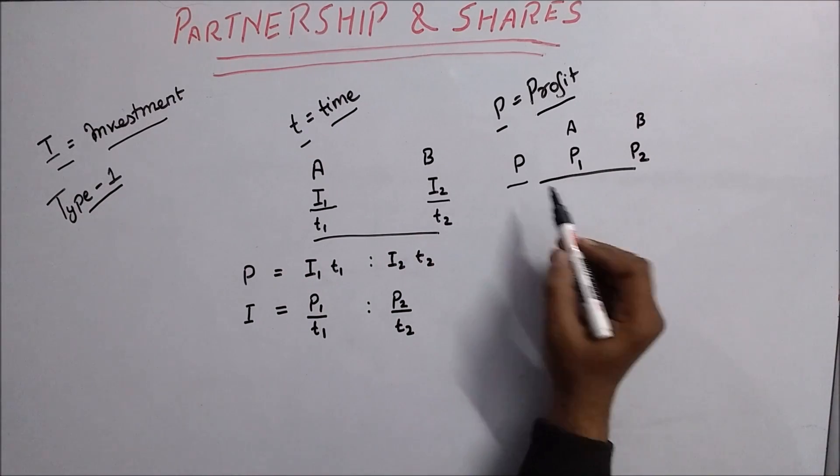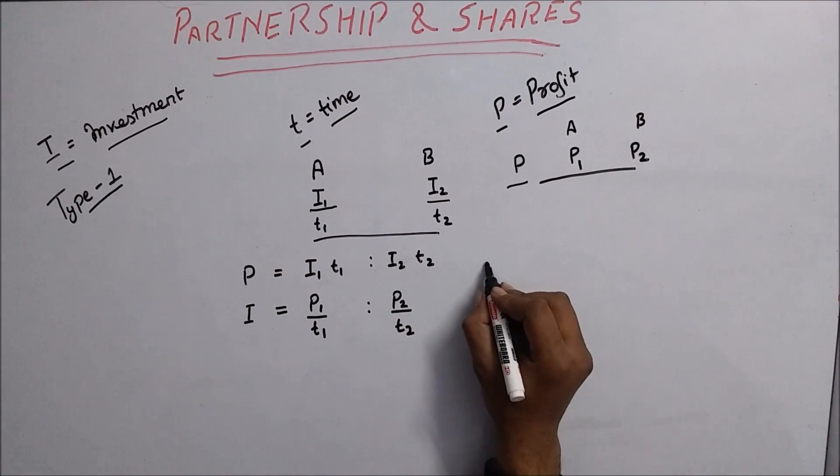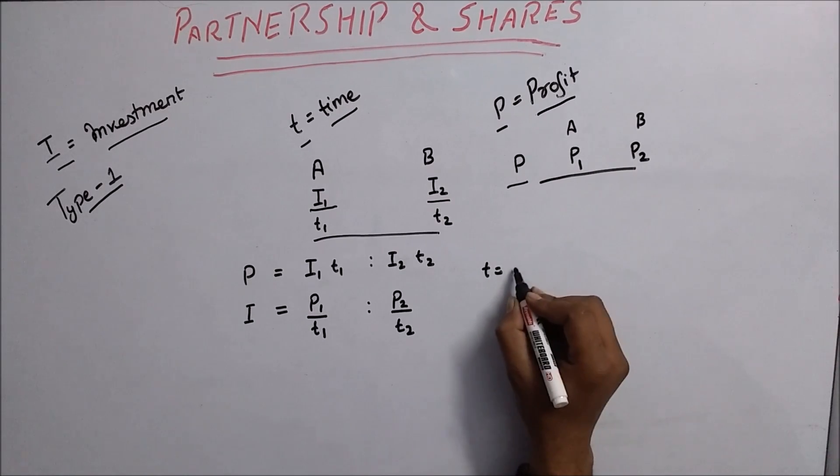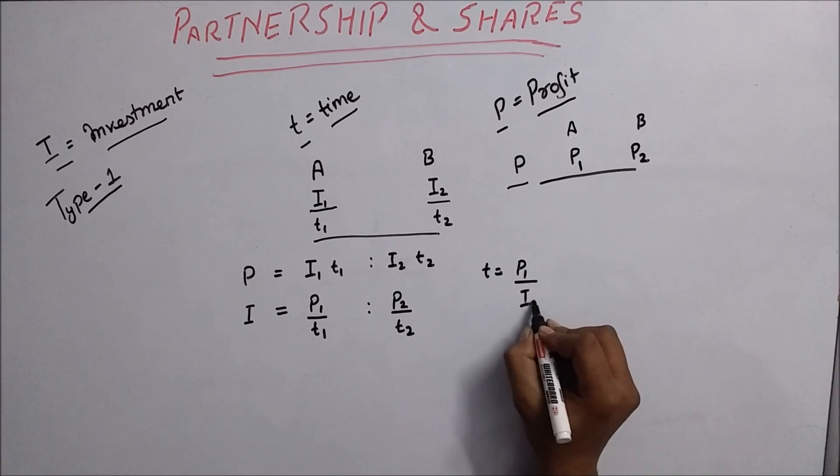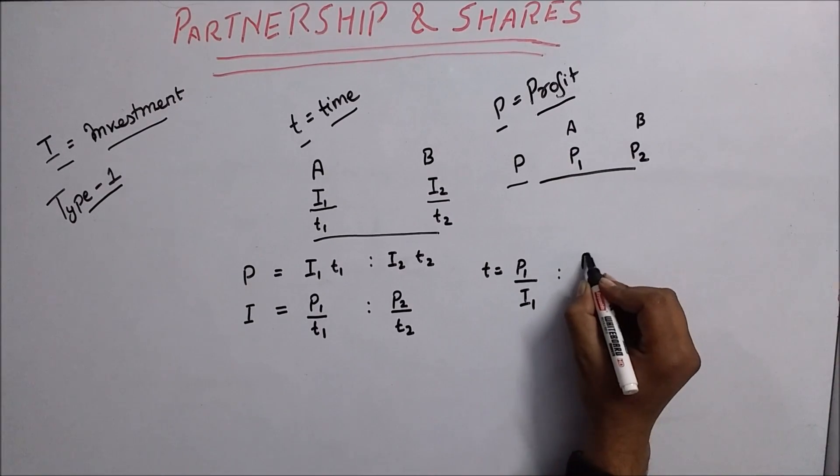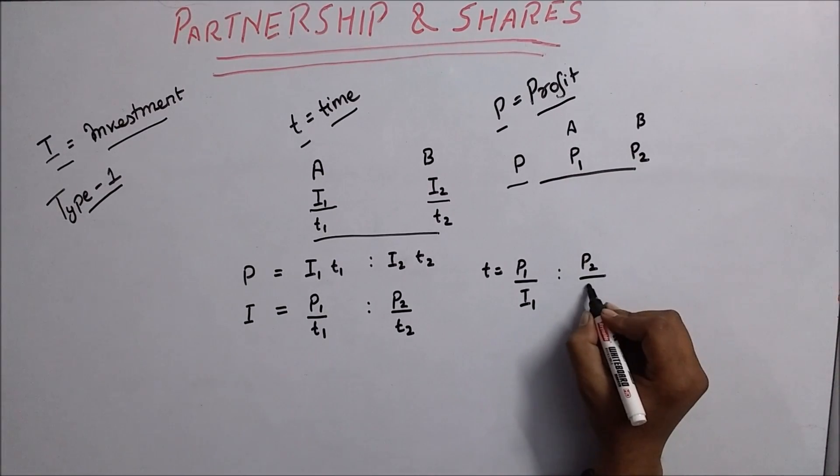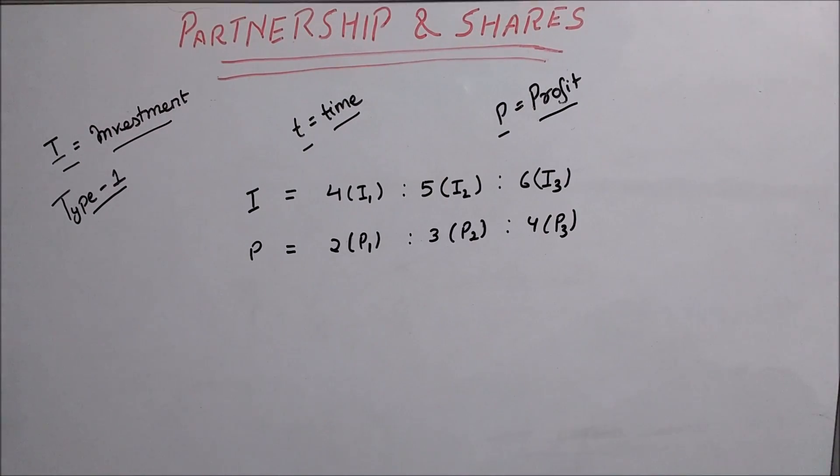If investment and profit are given and we need to find time, then it is P1 divided by I1 ratio P2 divided by I2.